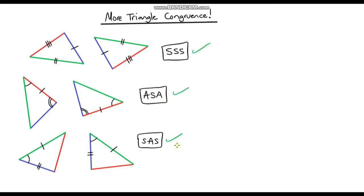What I mean by that is if we're given two triangles that have the same side, angle and side in that particular order, then we know for sure that those two triangles are congruent. And likewise if we're given two triangles that have the same angle, side and angle, those two triangles are congruent. And it also works if we have two triangles that have all three of the same side lengths.